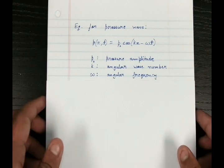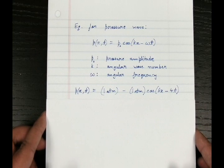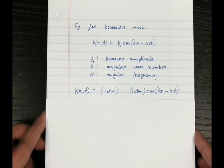Let's take an example of a pressure wave. So let's take this example: p is equal to 1 minus 1 cos 6x minus 4t. The units are of atmospheric pressure.